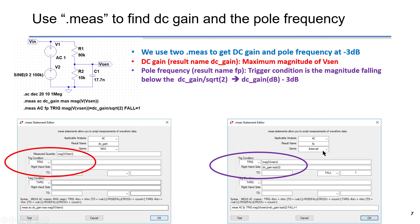On the right-hand side, we find the pole location at minus 3 dB. We use AC analysis and name the result Fp. The trigger condition is when the magnitude of Vsense becomes DC gain divided by the square root of 2 — which in dB means DC gain minus 3 dB — giving us the pole frequency location. We use the falling edge as the trigger because as frequency increases, the magnitude of Vsense decreases.